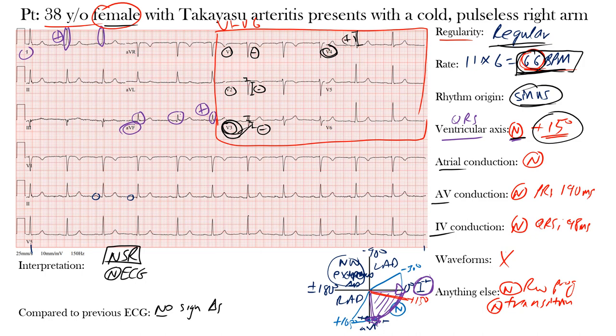In conclusion, our 38-year-old female with Takayasu Arteritis presenting with a cold, pulseless right arm has an EKG showing normal sinus rhythm. That's the end of this week's EKG of the week — I hope you learned something.